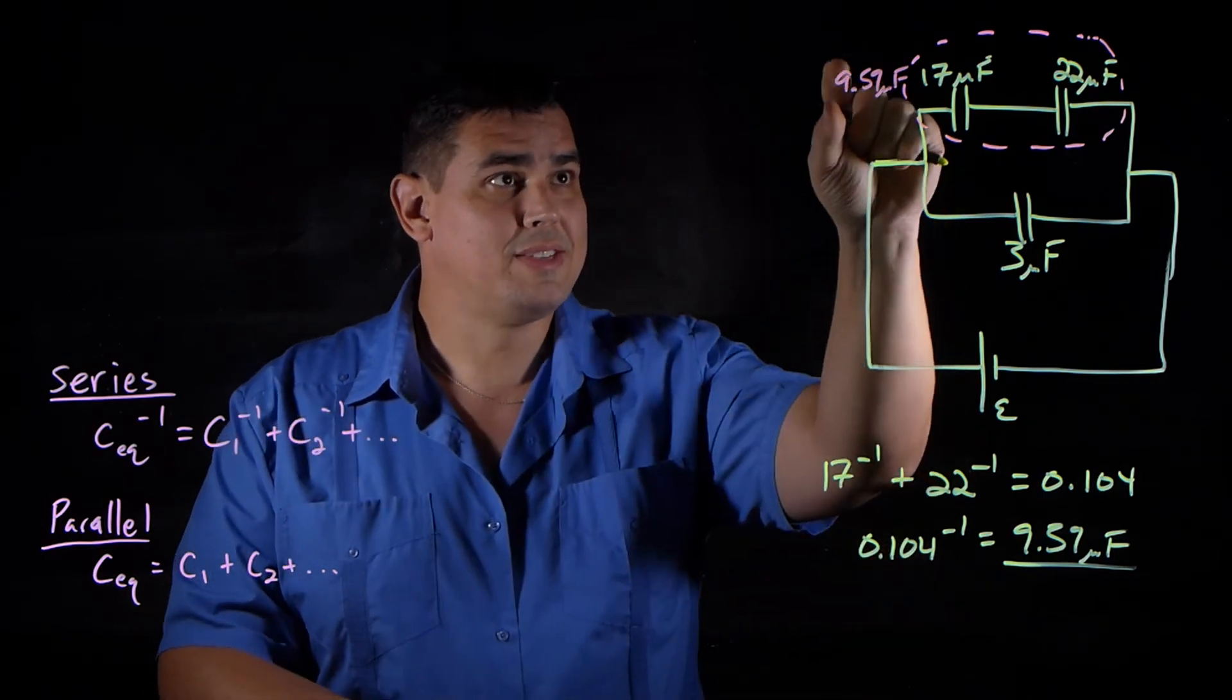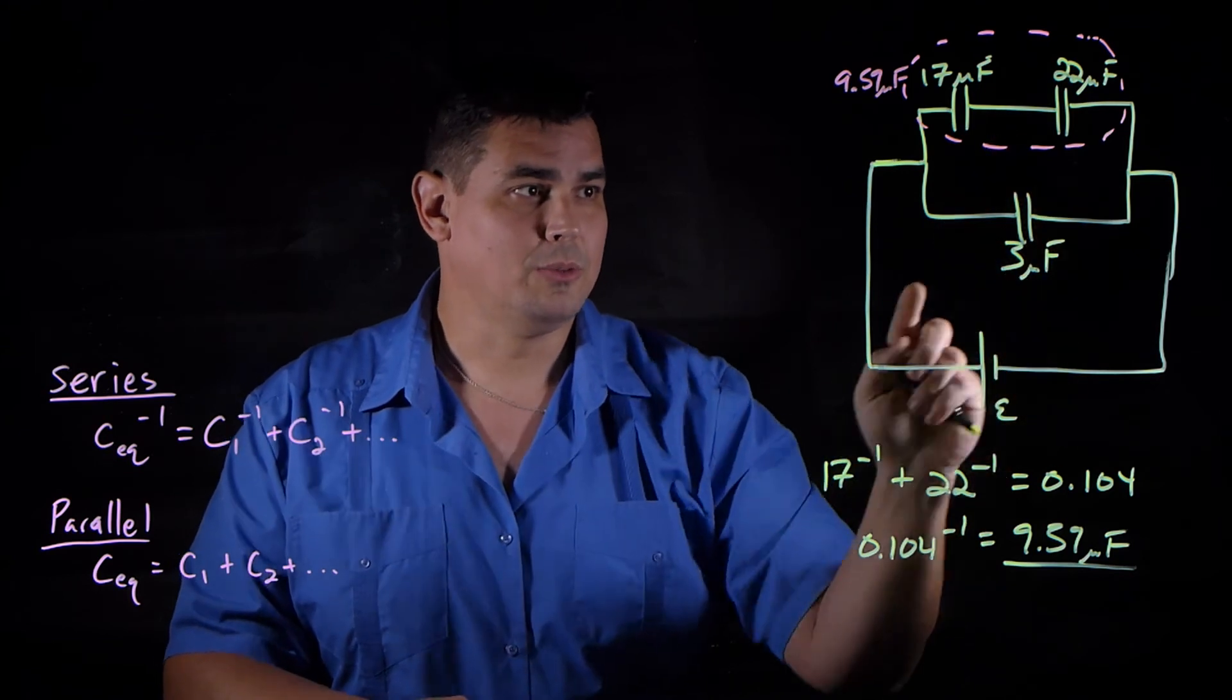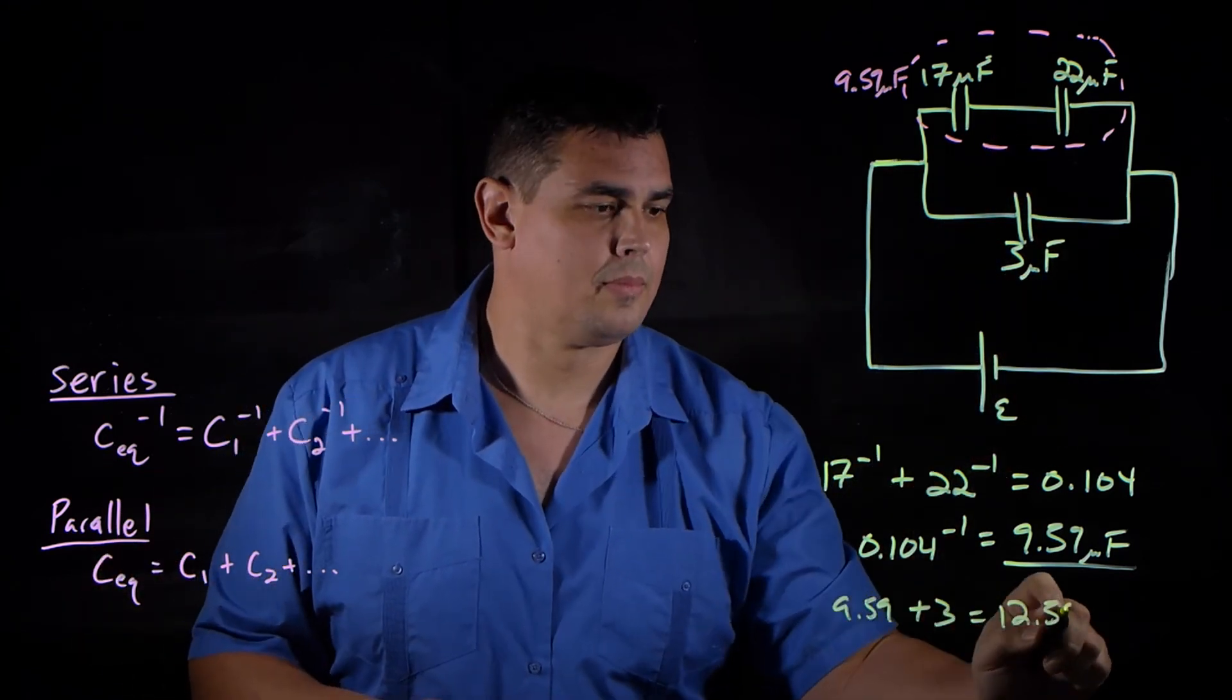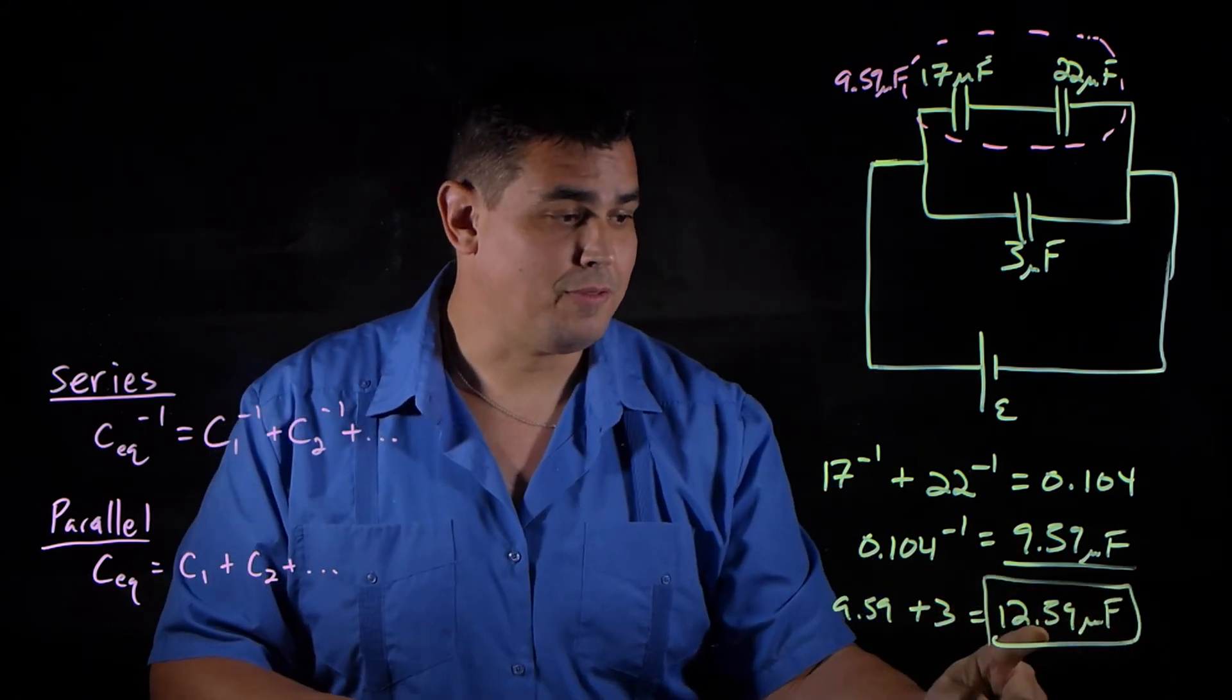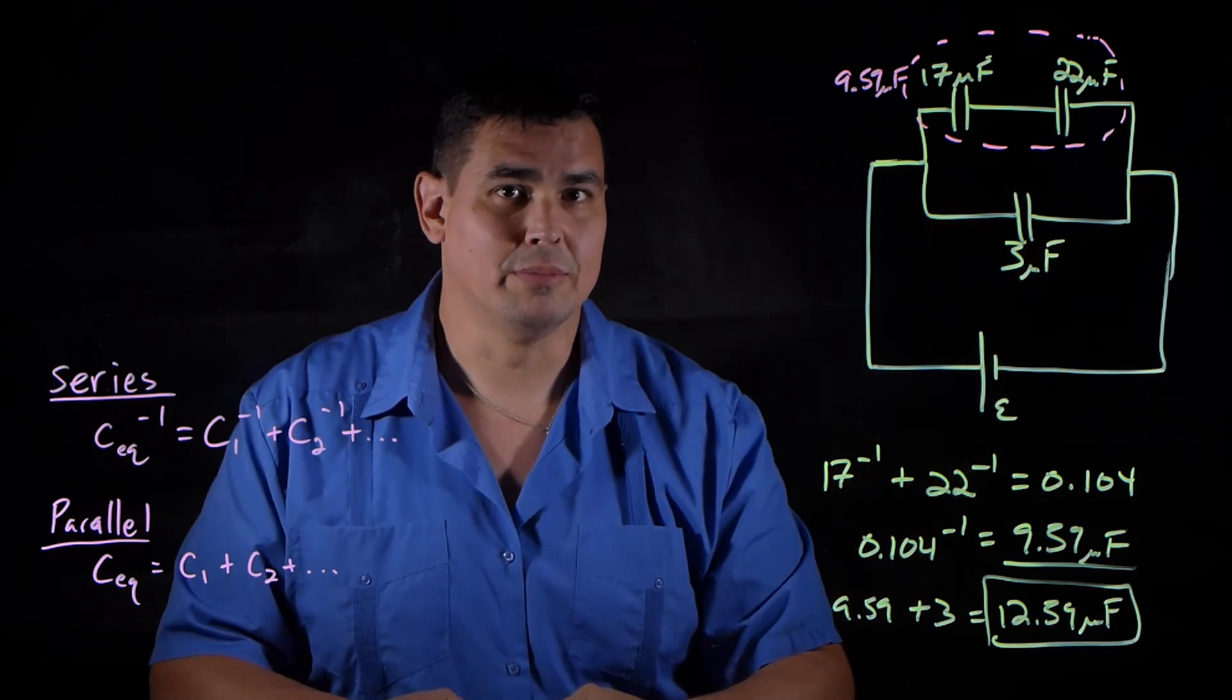So now this 9.59 microfarad little system right here is in parallel with that three, so I can add them in parallel. So my answer is 12.59 microfarads. That's the equivalent capacitance of this setup of capacitors right here.